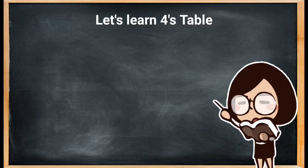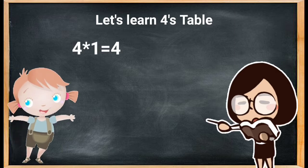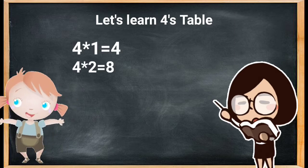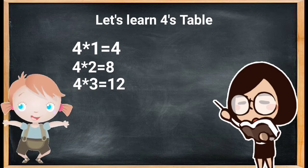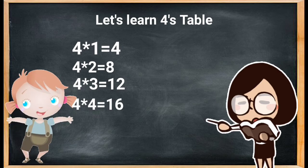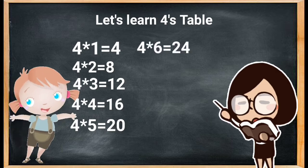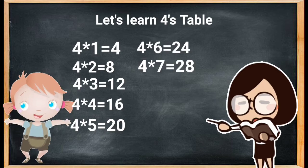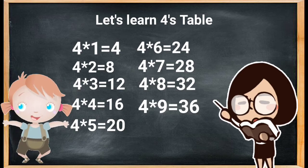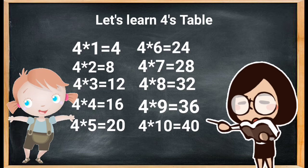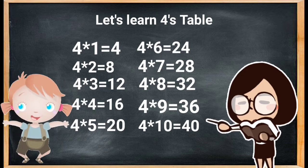Hello everyone, today we are going to learn the four times table. So let's start: four ones are four, four twos are eight, four threes are twelve, four fours are sixteen, four fives are twenty, four sixes are twenty-four, four sevens are twenty-eight, four eights are thirty-two, four nines are thirty-six, four tens are forty. Let's repeat again.